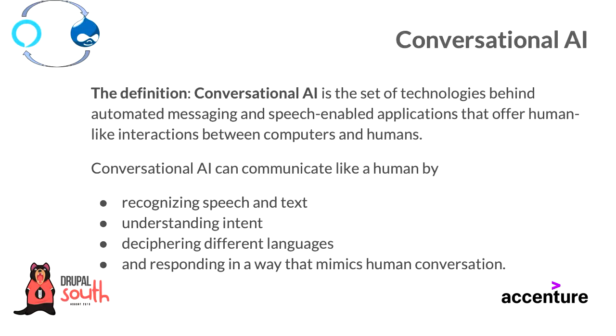The main thing about conversational AI is they try to provide human-like interactions between computers and humans. They can act like a human by: number one, recognizing speech and text; understanding the intent of the user; deciphering different languages, because when it comes to natural languages it's not a straight algorithm; and responding in a way that mimics human conversation.